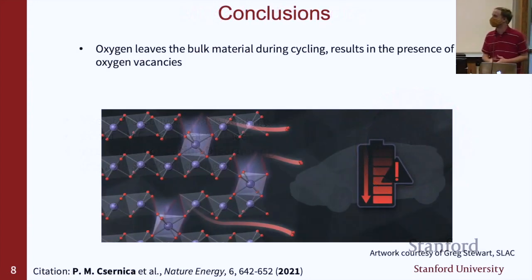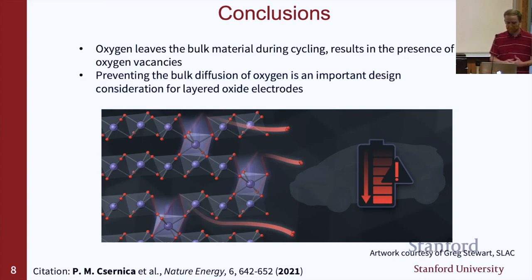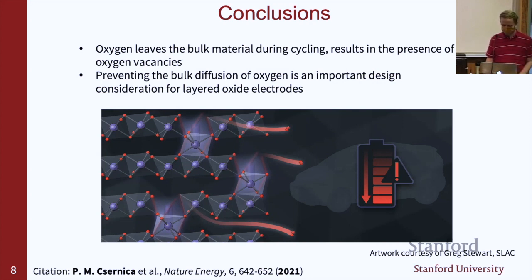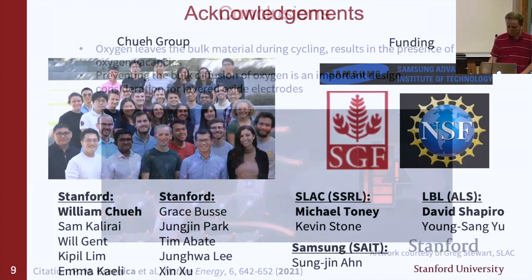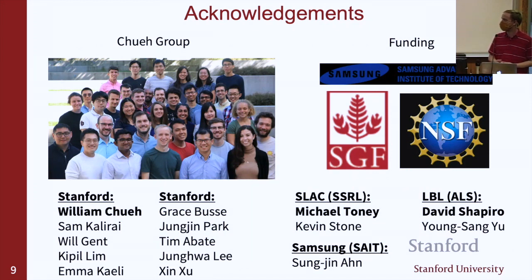To wrap up, the main conclusions are that oxygen leaves the bulk material during cycling, resulting in the presence of oxygen vacancies. Therefore, preventing bulk diffusion and release of oxygen is going to be very important for stabilizing the voltage over hundreds of cycles. I'd like to acknowledge my research group, Will Chu's group in materials science. This is also a collaborative effort with people at both SLAC and Lawrence Berkeley National Lab, as well as Samsung. Thank you.